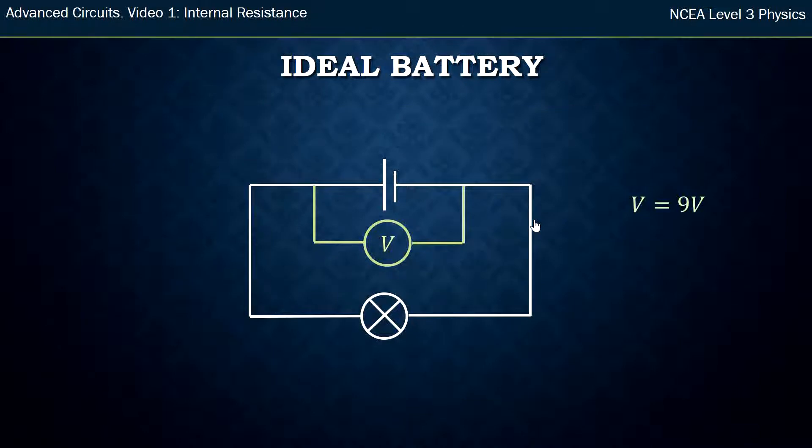So my ideal battery circuit that I had before is this. I've got my one light bulb and nine volt battery, and I've done my voltage probe in a slightly different color so you can see that it's measuring within the circuit, and don't think of it as another section of the circuit. So the voltage I measured was nine volts.